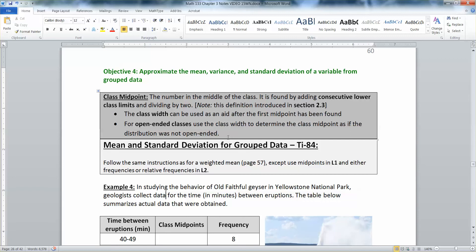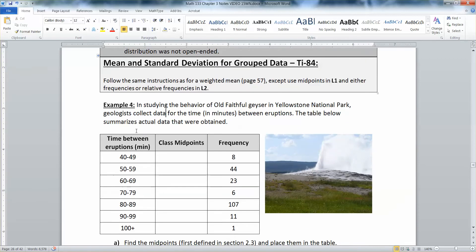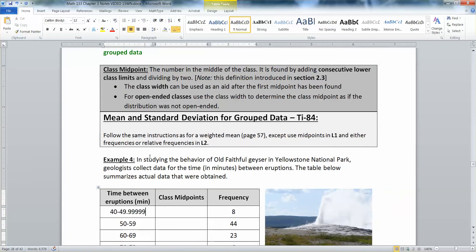When you have grouped data, you're grouping the data into bins. For example, 40 to 49 minutes, 50 to 59 minutes, and so on. I'm lumping everybody between 40 and 49.999999, because technically this goes on forever. When I group it into those bins, I need a single number that's going to represent the middle of that class. That's called the class midpoint.